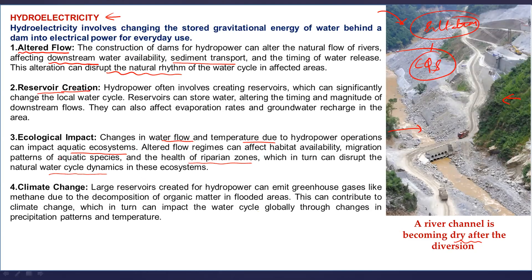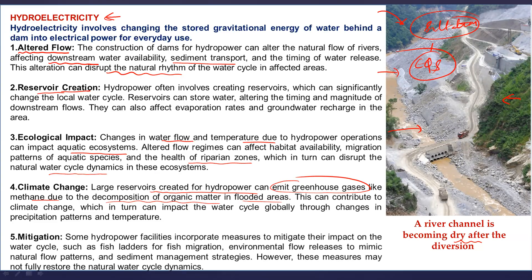Climate change is a major buzzword, and it has different scales from mini to macro — little changes at a smaller level also impact the global ecosystem. Large reservoirs created for hydropower can emit greenhouse gases like methane due to decomposition of organic matter in flooded areas, and patterns of temperature and precipitation change. There is also loss of wildlife, flora, and fauna. Hydroelectricity is needed, but sustainability must be considered. Some hydropower facilities do incorporate mitigation measures such as fish ladders for fish migration and environmental flow releases, but not everywhere.